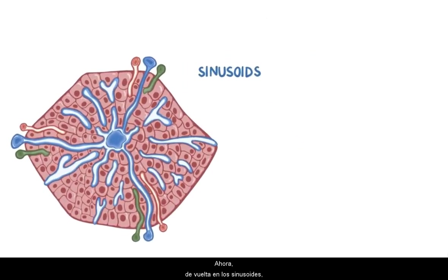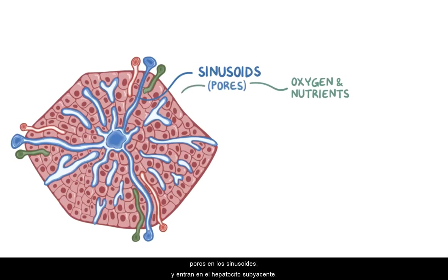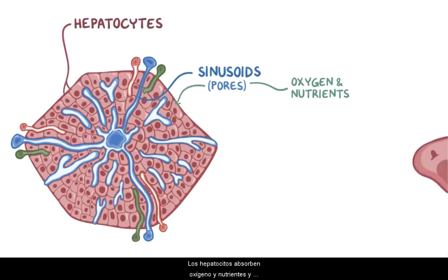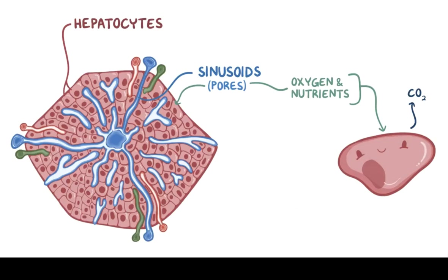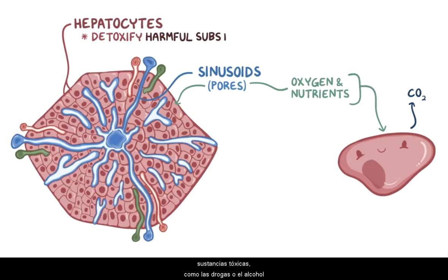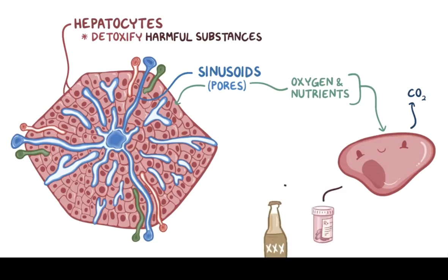Now, back in the sinusoids, oxygen and nutrients are able to get through pores in the sinusoids and enter the underlying hepatocytes. Hepatocytes take in oxygen and nutrients and deposit carbon dioxide into the blood, like every other cell in the body. But in addition, they also pick up and detoxify harmful substances, like drugs or alcohol.